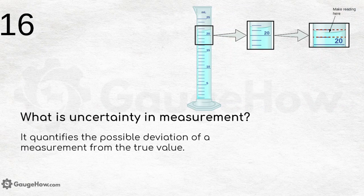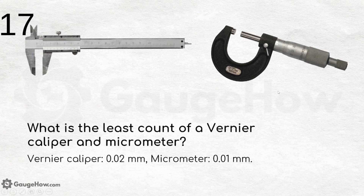What is uncertainty in measurement? It quantifies the possible deviation of a measurement from the true value. For example, if a reading shows 20, the uncertainty is reflected in the deviation indicated by the red lines on the scale.